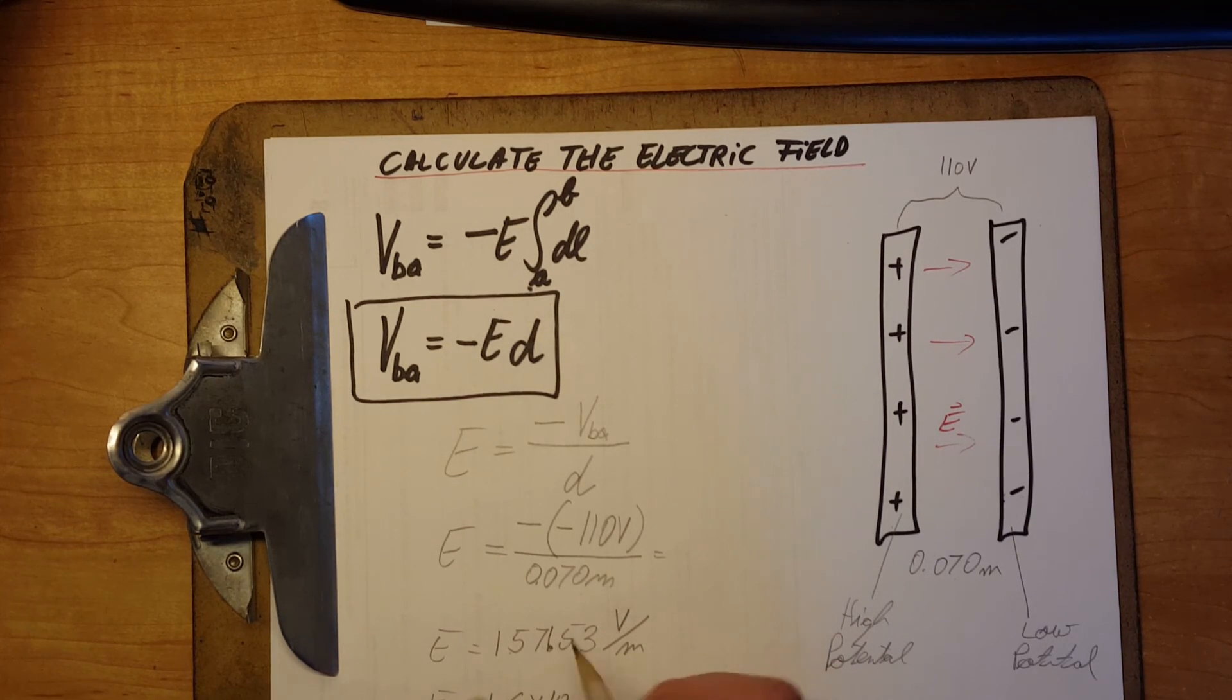10 to the 1, 2, 3. 10 to the third volts per meter. And this is our answer. Thank you.